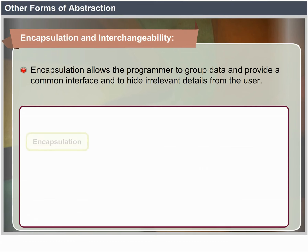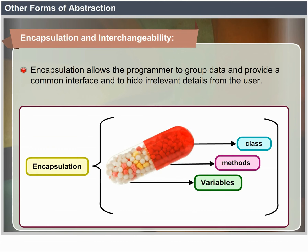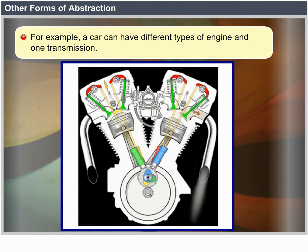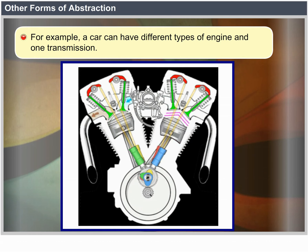Encapsulation allows the programmer to group data and provide a common interface, and to hide irrelevant details from the user. It allows two objects differing in internal representation but having a common interface to be interchangeably usable — that is called interchangeability. For example, a car can have different types of engine and one transmission.